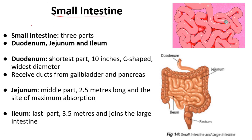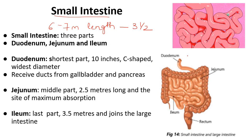The small intestine is a long tube comprising approximately 6 to 7 meters in length, which is approximately 3 and a half times larger than the human body. How is this 6 to 7 meter long tube present in our body along with the different organs? Basically, the structure is present in a coiled form, so this very long tube is coiled and hence it is present in our abdominal cavity.